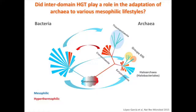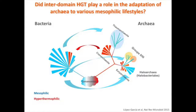We can hypothesize — and the data are compatible with this — that just as hyperthermophilic bacteria adapted secondarily to high temperature by acquiring genes from hyperthermophilic archaea via horizontal gene transfer, mesophilic archaea adapted from hyperthermophilic ancestors towards mesophily by importing genes from bacteria, often the same types of genes. More data should validate this, but there is already quite solid support for the idea.